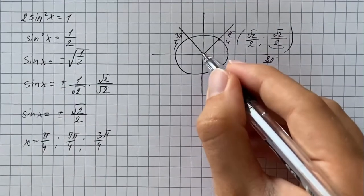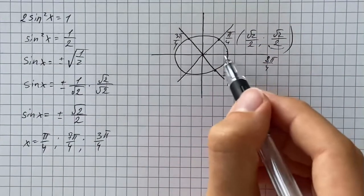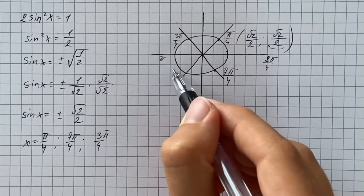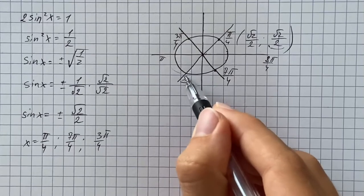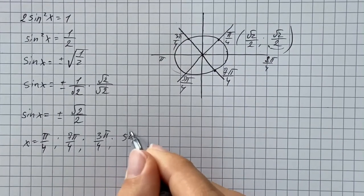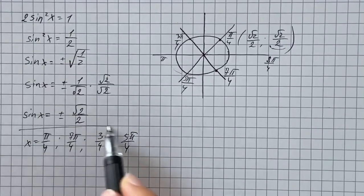And also we're going to have the same angle in the third quadrant, so it's going to be pi plus pi over 4, so that gives us 5 pi over 4. These are our four answers.